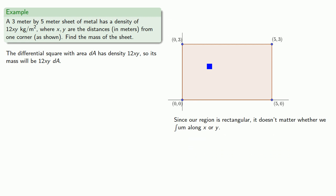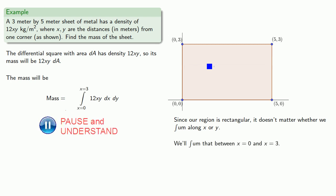Let's sum along x first. We'll sum our mass between x equals 0 and x equals 3. Then we'll sum along y as y goes from 0 to 5.